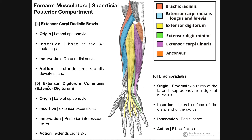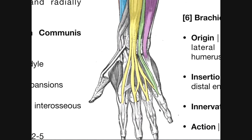Muscle five is extensor digitorum communis, sometimes just shortened to extensor digitorum — the yellow muscle. This muscle originates at the lateral epicondyle of the humerus, the common extensor origin. Following the fibers distally, once they get to the wrist, we can see that the fibers diverge into four separate tendons. These are each going to go to the extensor expansions, just like we saw for extensor digiti minimi — to the extensor expansion of digit five, four, three, and two.